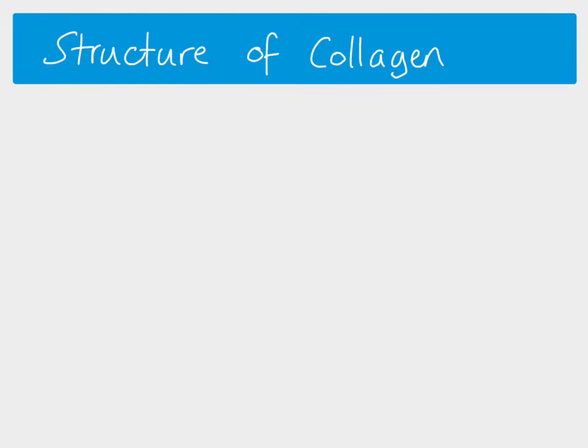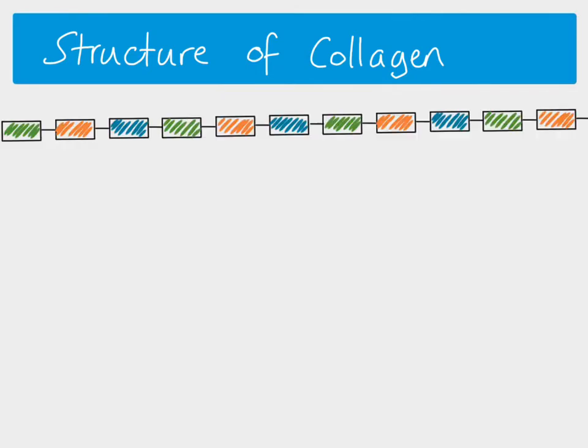Let's look at the structure of collagen first. It's a fibrous protein and it's very important in our body as a structural protein, so it's involved in our skin, our tendons and so on. If we look at the amino acid sequence, we have a very repetitive, regular sequence of amino acids. You can see three amino acids which just repeat over and over again, and that means you end up with a protein which is very regular in its shape.